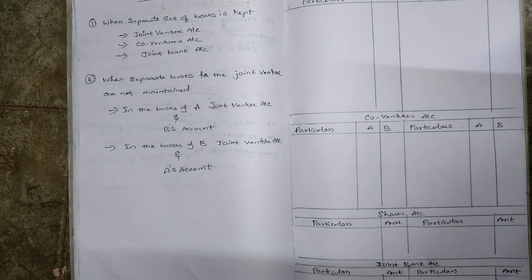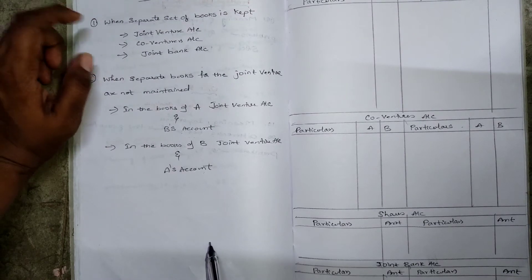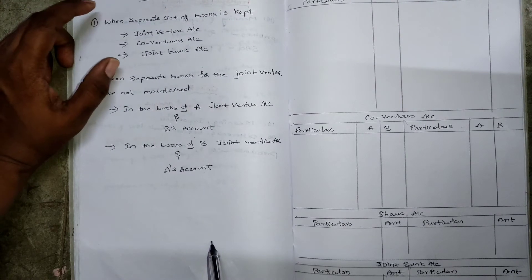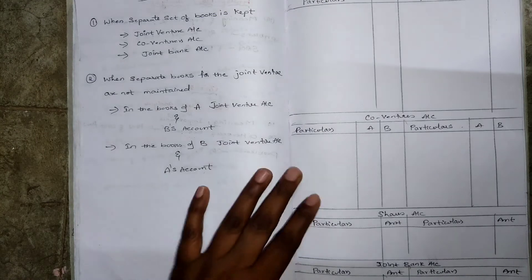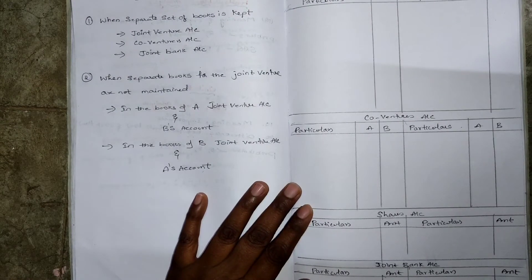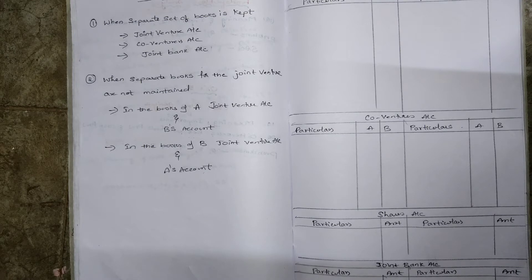This type of question about the joint bank account relates to the first method. I will show you the first method. If you have a question about the joint bank account, open the ledger accounts in the books of A or B.